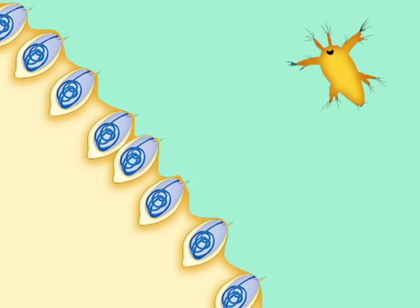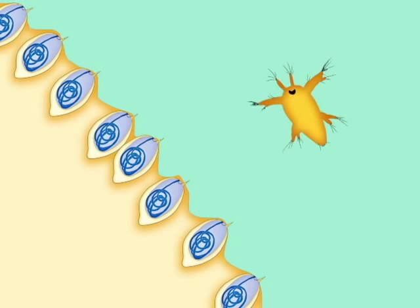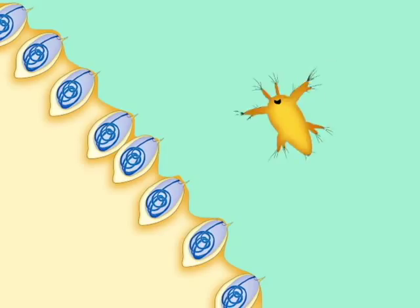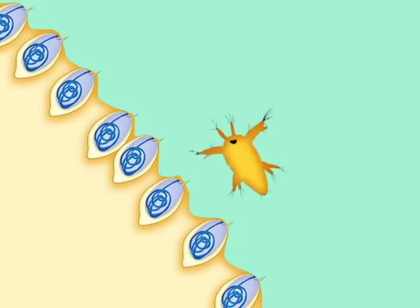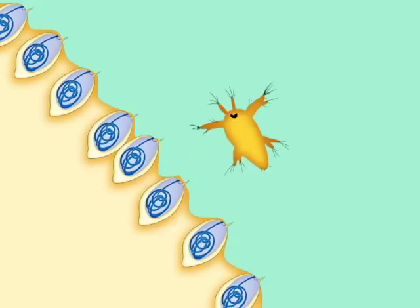The cnidocysts discharge is triggered, for example, when the human skin or prey come into contact with the tentacle. The thread is ejected and penetrates the victim, and the toxin is injected into its tissues.